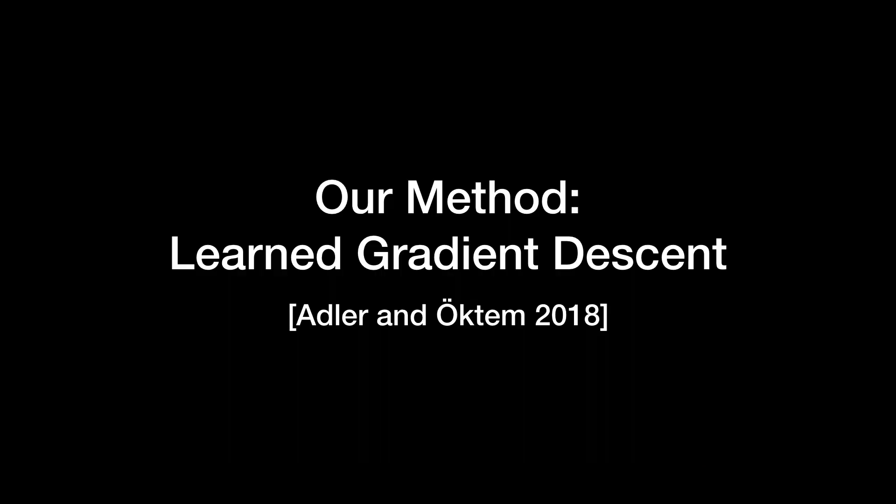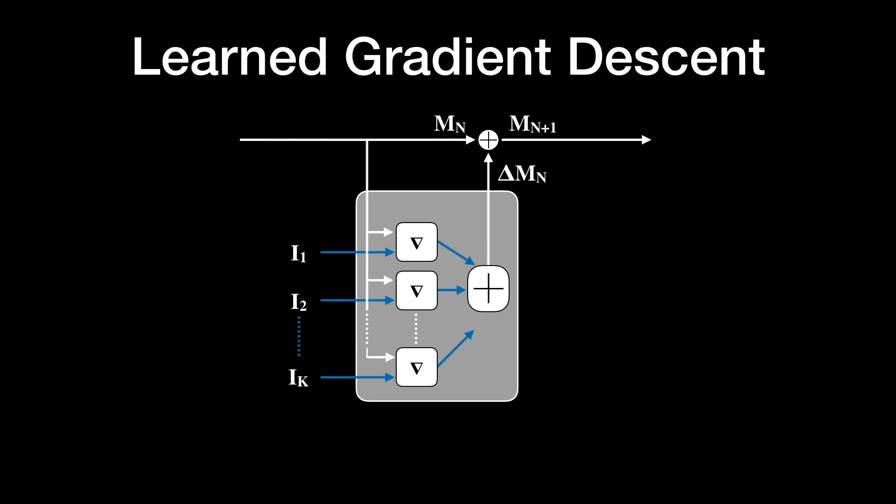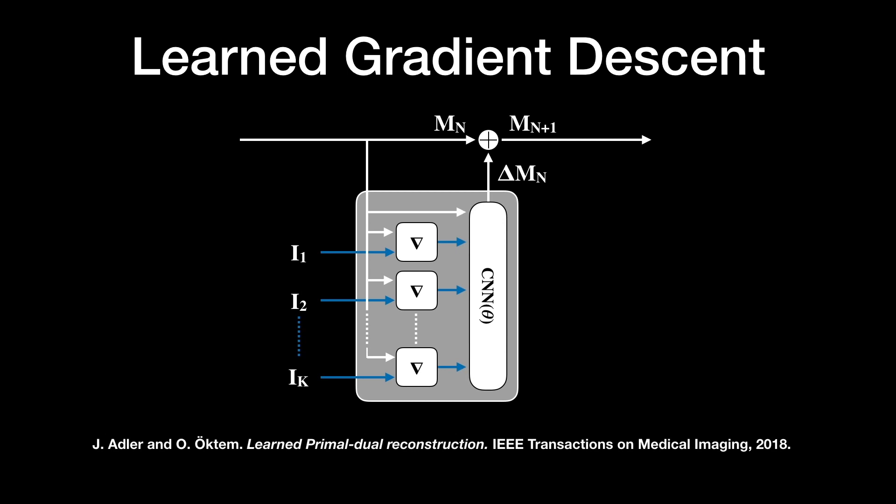Our method instead uses the recently introduced learned gradient descent. This technique combines the best features of deep learning and direct optimization. Traditional deep learning relies on optimization only during training to find the network weights. However, learned gradient descent models inverse problems such as MPI generation as unrolled optimizations at inference time. This is achieved by replacing the simple gradient descent update rule with a CNN, which can learn to take larger steps and reduce overfitting by constraining the MPI to lie on the manifold of plausible scenes.